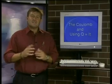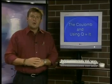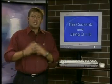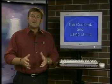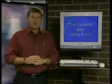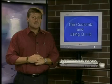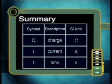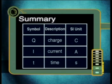Can you remember in our previous lesson we learnt all about the equation q is equal to i times t? Can you remember what everything in the equation means? Q stands for charge, which we measure in coulombs. I stands for the current, measured in amperes, and t stands for time, measured in seconds.